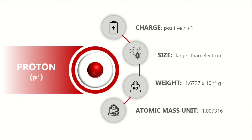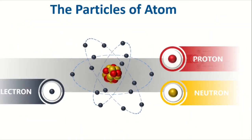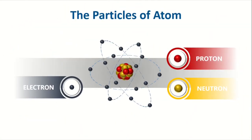The atomic mass unit of proton is 1.007316. Thus, it contributes one unit to atomic mass.